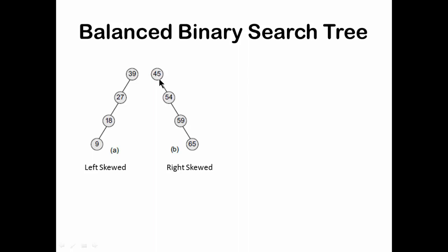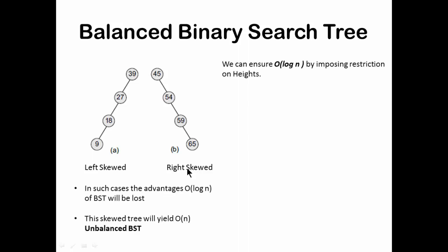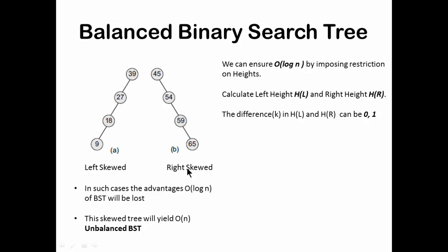We can ensure order of log N by imposing restrictions on the height. The variation in the left and right subtree heights cannot be more than 1. If k equals 0, you have a complete height-balanced binary tree. If k equals 1, there will be a height difference of 1 between the left and right subtrees — that is still considered a balanced binary search tree. Anything beyond k equals 1 is an unbalanced binary tree.